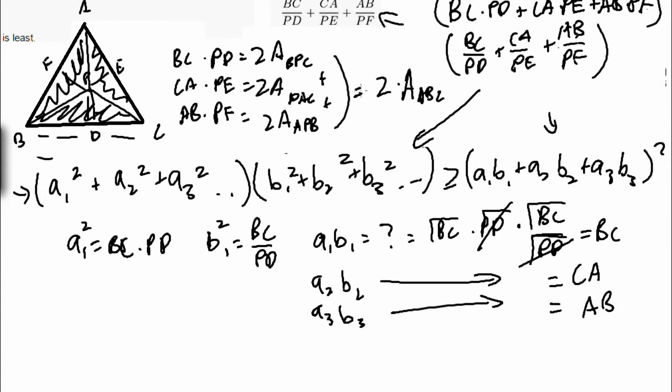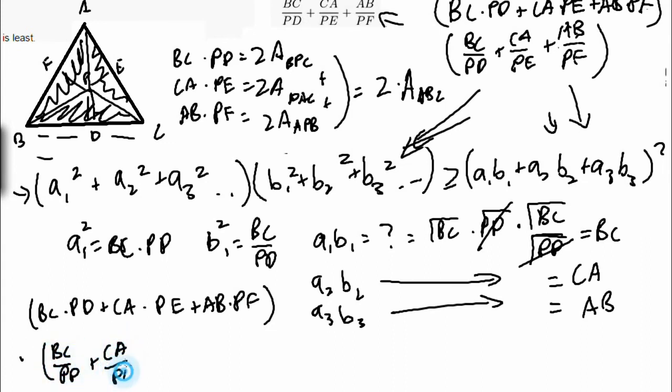So a2 times b2 is just equal to CA, and a3 b3 is just equal to AB. And it's really cool how when you plug these values into here, you get something so neat on this side. So really, if you write the expression out, if you write this out, you get that this is greater than or equal to AB plus BC plus CA squared.